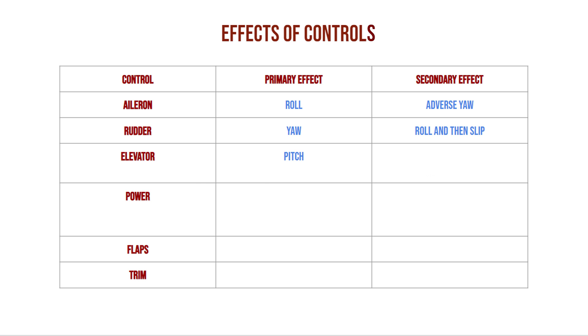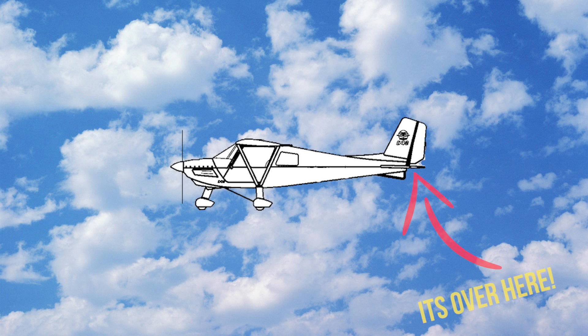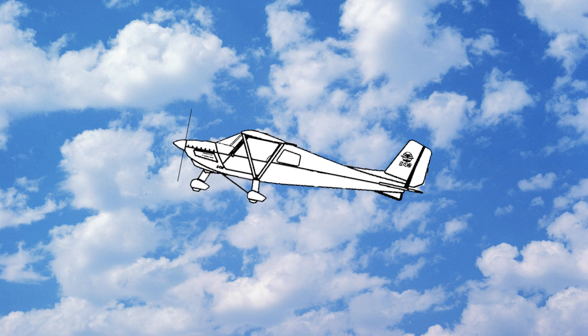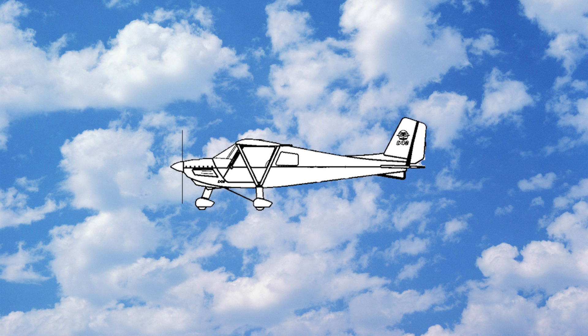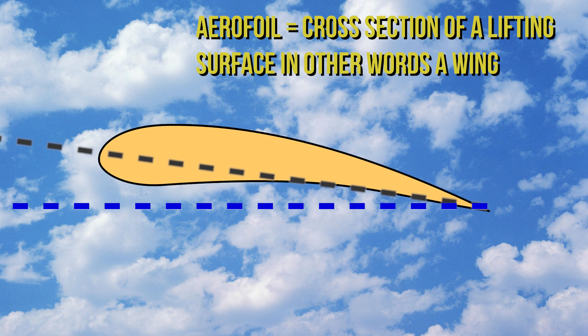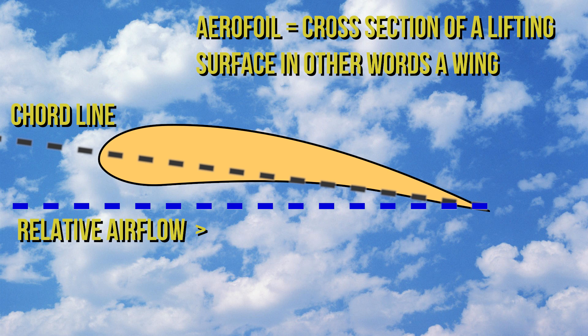The elevator. By moving the stick back and forward we are moving the elevator on the aircraft. This primarily will control our airspeed. Pull the stick back and the nose will rise. This increases the angle of the chord line to the relative airflow, known as angle of attack. A higher angle of attack will create more lift as well as more drag.